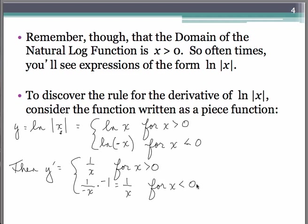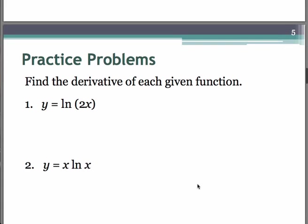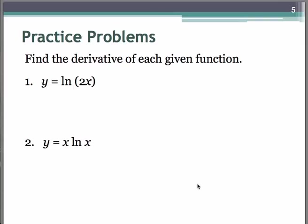The derivative is still going to be 1 over x — it's almost as if the absolute value bars don't matter. So that's one big thing to keep in mind: regardless of whether you're presented with y equals natural log of x or y equals natural log of absolute value of x, it is still the same derivative rule. Let's try some practice problems. The first one is a chain rule problem because we have natural log of 2x — this 2x would be like your u.